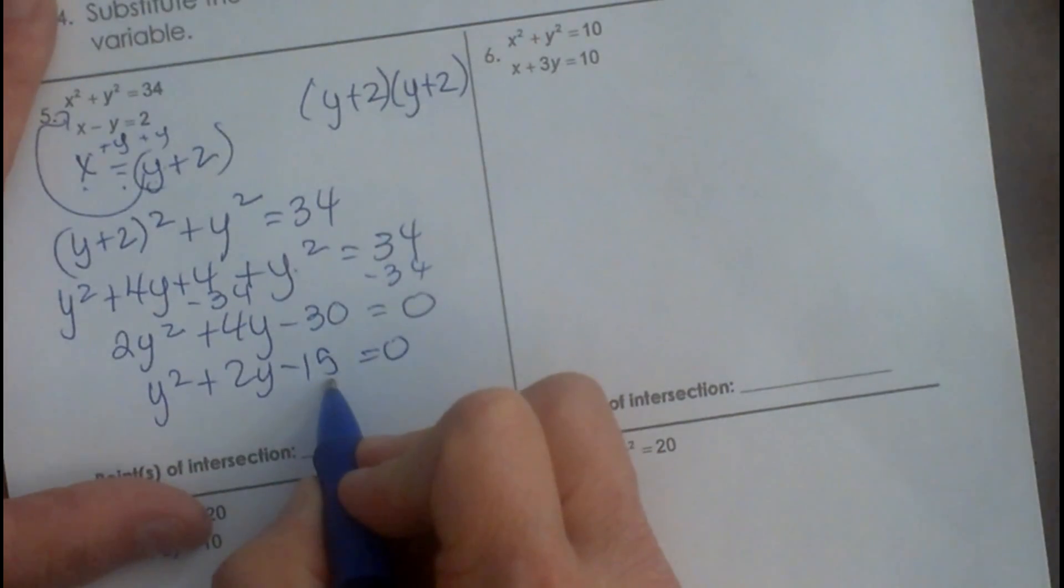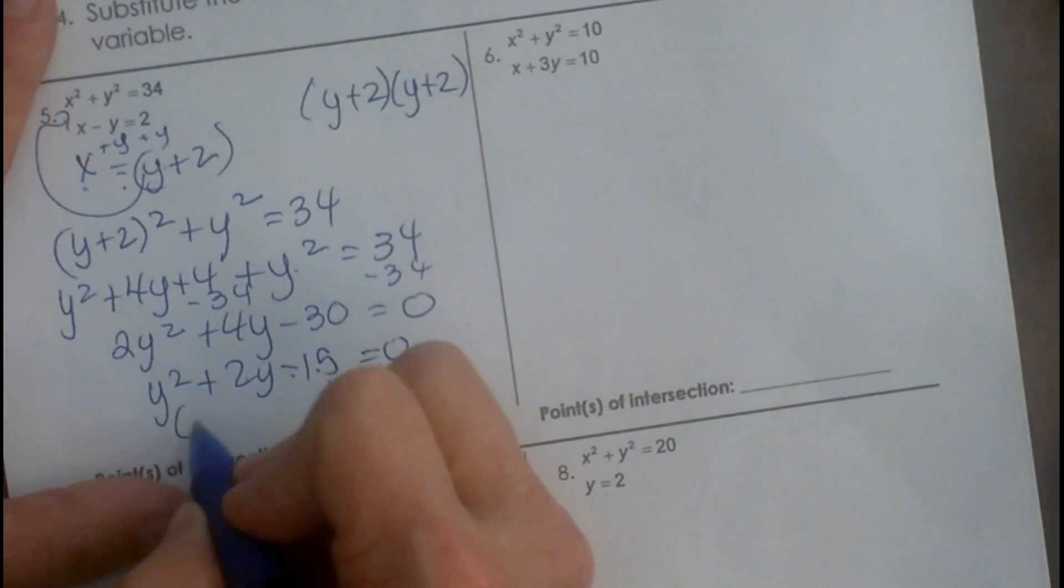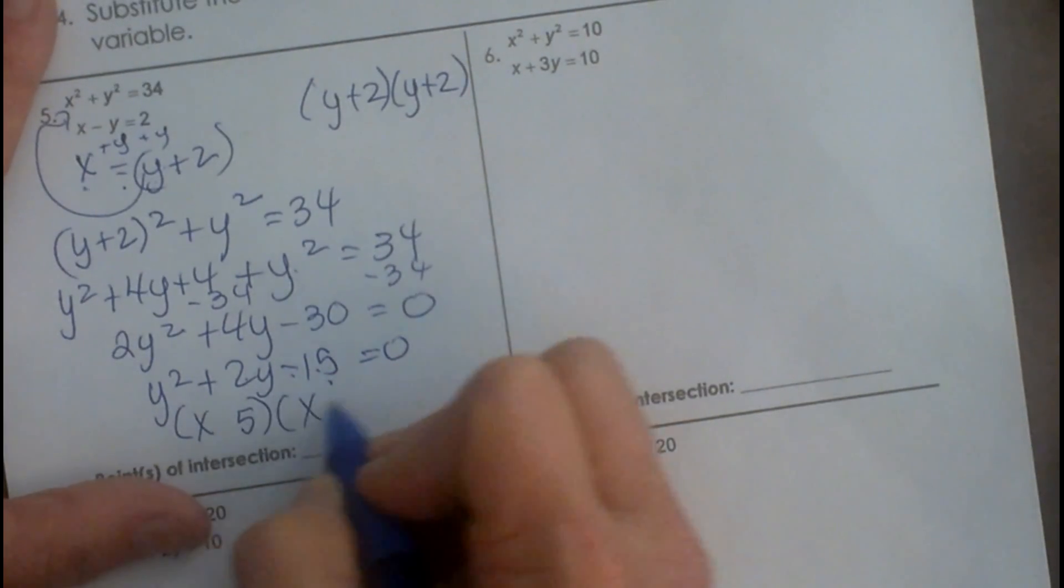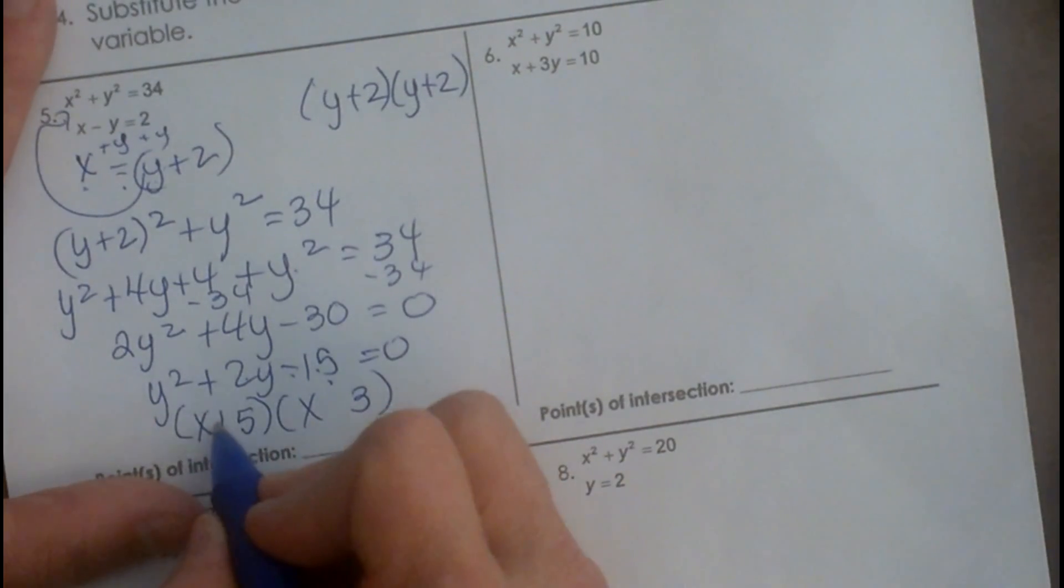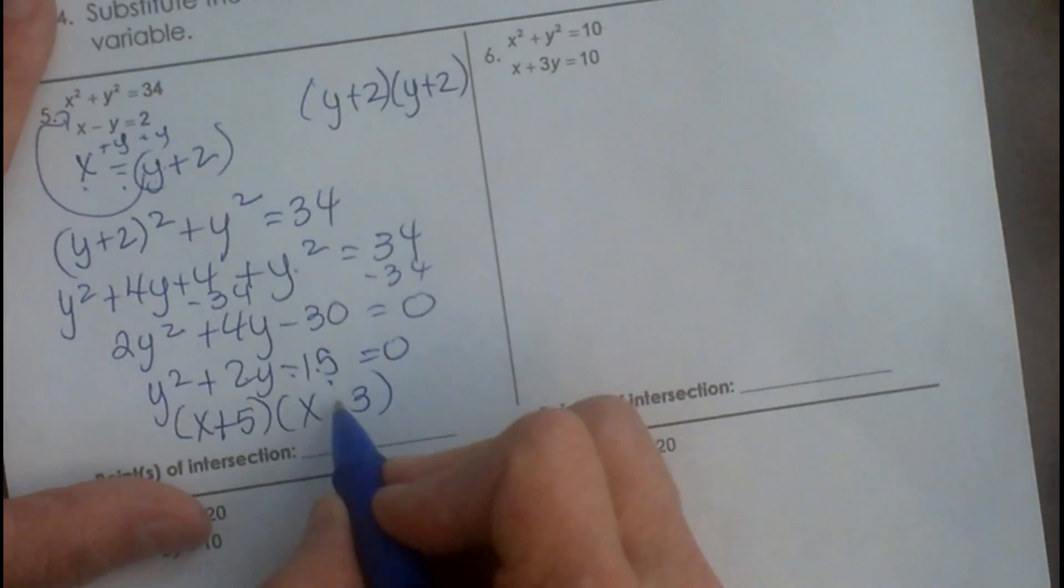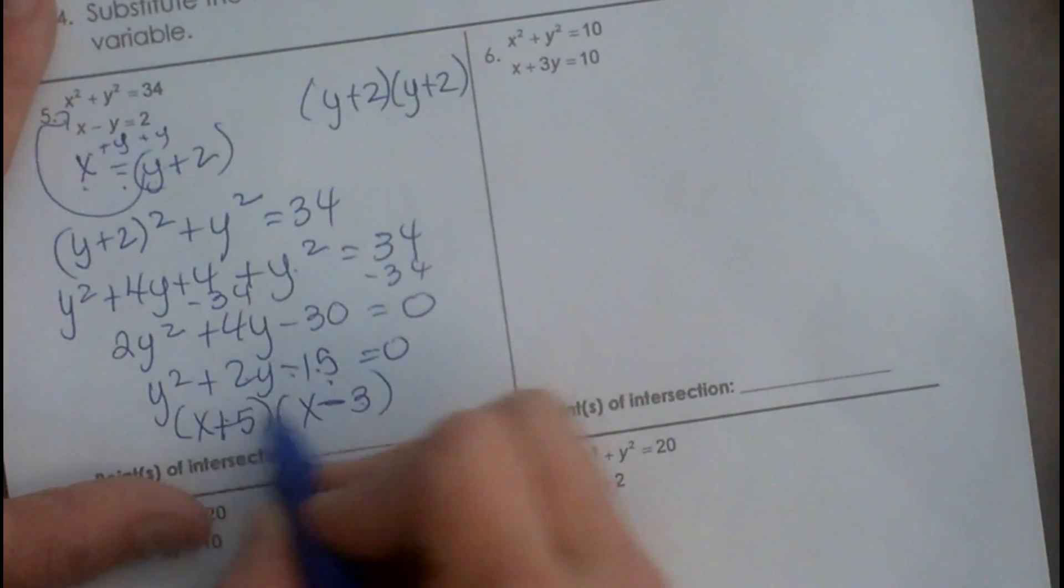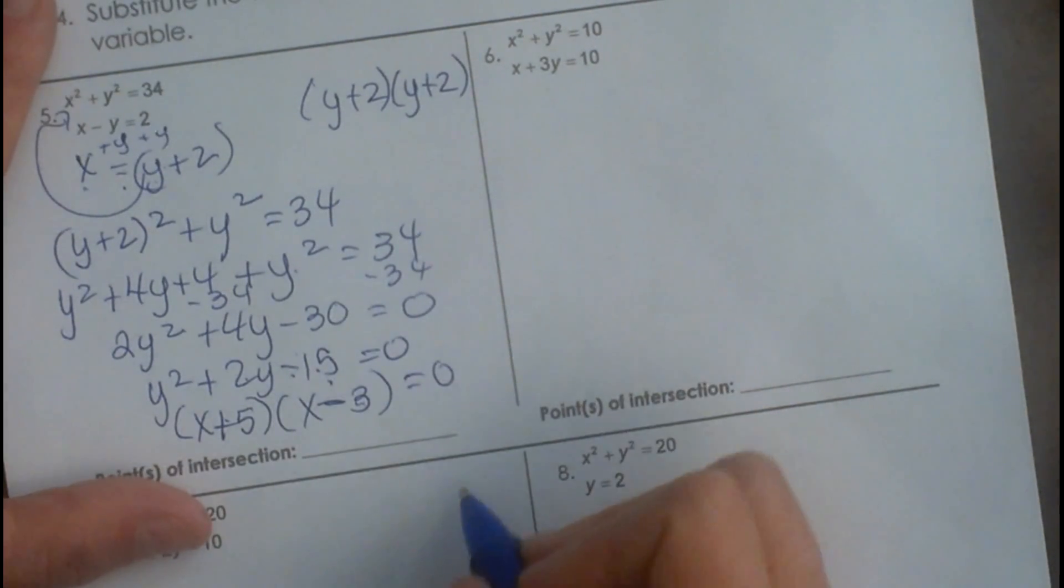What multiplies to 15 that has a difference of 2? How about 5 and 3? So it's going to factor into 5 and 3, a positive 5 because the 2 is positive, and a negative 3 because the product would be negative. So what are the solutions?